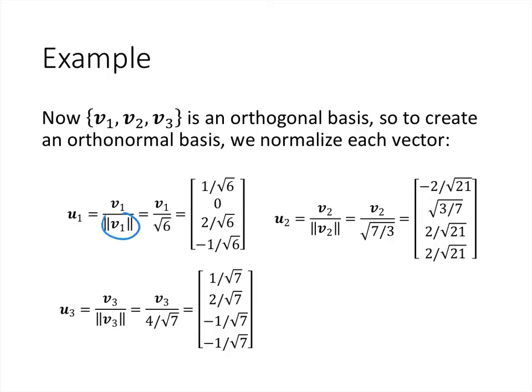So it turns out that the length of the vector v1 is the square root of 6, and so when we divide by the square root of 6, we get this vector, which is what we're calling u1. u stands for unit vector, so that's what we have here. Again, we divide v3 by its length, the length of v3 turns out to be 4 over radical 7, and so when we divide, we get this.